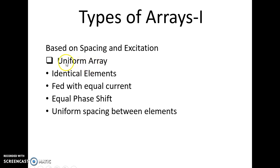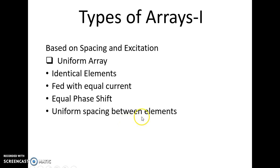A uniform array, as the name indicates, is uniform in different parameters. The elements used in the array should be identical — if we use one dipole element, the other elements should also be dipoles. Similarly, uniformity applies to the current and phase fed to each element. Another parameter is uniform spacing between the elements: if the first two elements are spaced lambda by 2, then all subsequent elements should also be spaced lambda by 2.